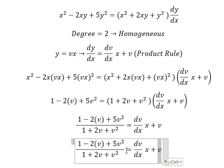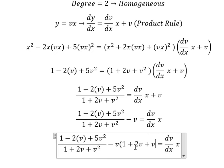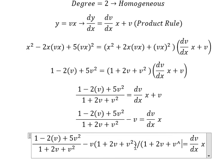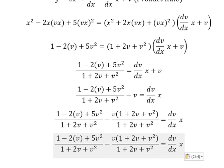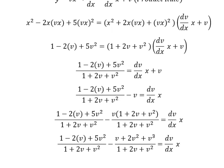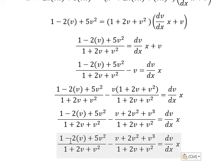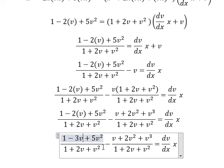Now I will move v to the left. Next we need to do a common denominator. So v multiplied by 1 plus 2v plus v squared. Now we need to combine the two fractions: negative 2v with negative v gives negative 3v, and 5v squared minus 2v squared gives positive 3v squared. So I will put this one here.